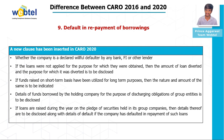Clause nine is Default in Repayment of Borrowings. The auditor has to ensure the following: whether the company has been declared a willful defaulter by any bank, financial institution, or other lender; if loans were not applied for the purpose for which they were obtained, then the amount and purpose shall be disclosed; if funds raised on a short-term basis have been utilized for long-term purposes, then the nature and amount shall be disclosed; details of funds borrowed by the holding company for the purpose and obligation of group entities must be disclosed; and if loans are raised on the pledge of securities held in group companies, details along with any defaults in repayment are to be disclosed.